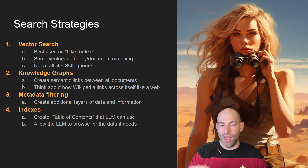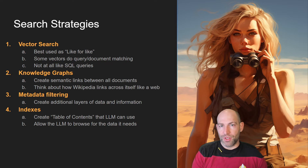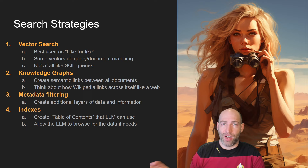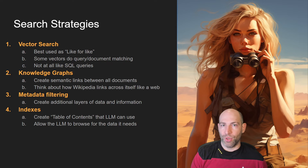Number two: knowledge graphs. These are a hybrid between relational databases and more web-like structures. Think of a Wikipedia page with references and crosslinks to other pages, each with a semantic meaning — the Eiffel Tower page links to the Paris-France page for a reason. A knowledge graph is essentially a web of content. You can use language technology to create, traverse, and reach knowledge graphs, adding a layer of semantic relationship navigation on top of your content.